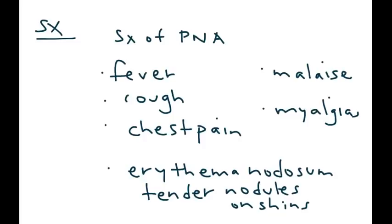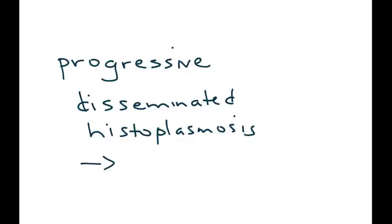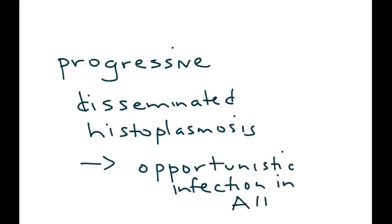One final thing before I get into the diagnosis is that there is a disseminated type of histoplasmosis called progressive disseminated histoplasmosis, and it occurs as an opportunistic infection in AIDS patients. That is very important in the symptomatology of a person that is immunocompromised.